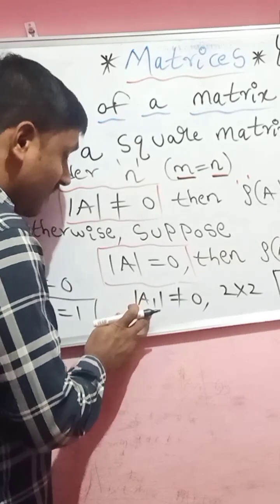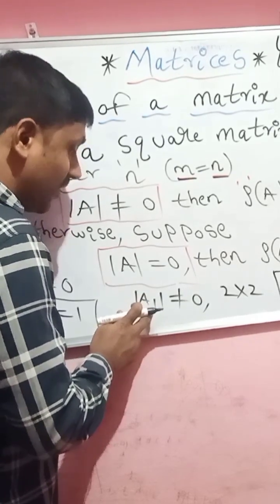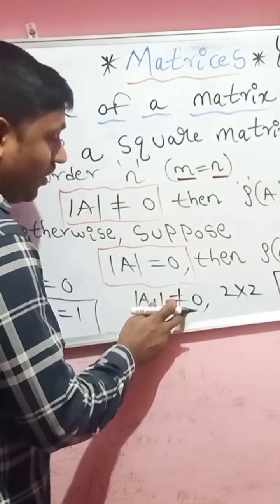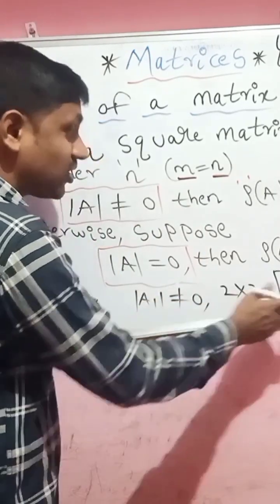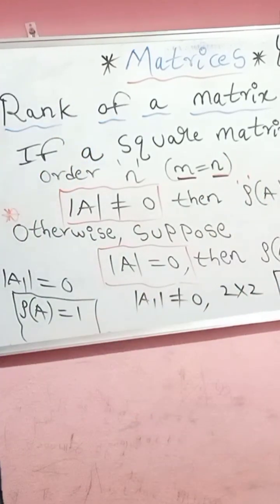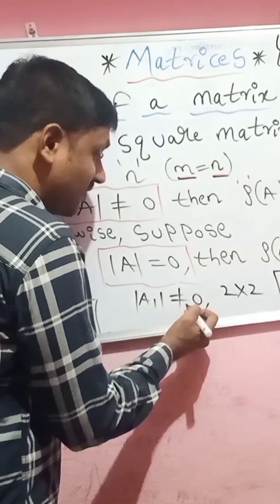And we are taking square sub-matrix determinant. If A1 is not equal to 0, square sub-matrix determinant is not equal to 0, rank should be 2, less than 3. Only in the case det A1 is not equal to 0.